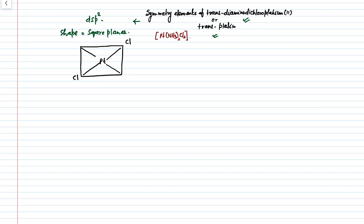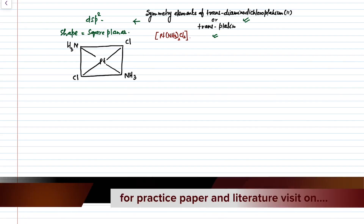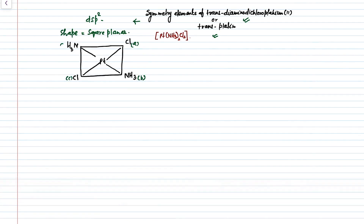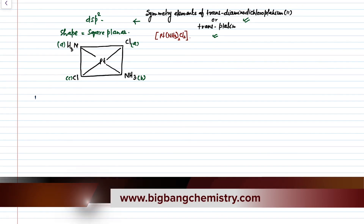This is the chlorine atom in trans position, this is the ammonia molecule in trans position again. For our best understanding, mark them as A, B, C, and D. So let's start the search for symmetry elements in this molecule. First of all, we will start with the principal axis of rotation, or Cn operation.